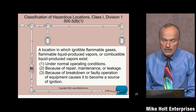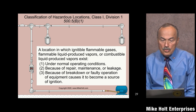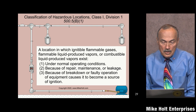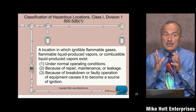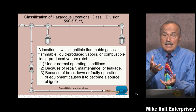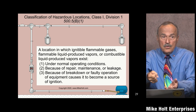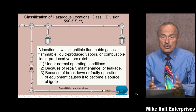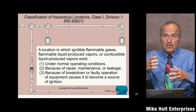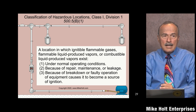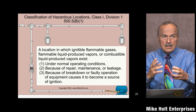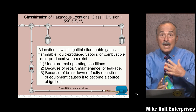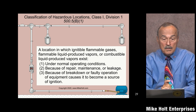Class 1 Division 1 is a location where ignitable flammable gases, liquid-produced vapors, or combustible liquids exist under normal operating conditions, or because of repair, maintenance, leakage, or equipment fault. For example, a gasoline dispenser — fuel is right there normally. Or maybe you're transporting propane tanks and something could fall and get damaged. Process engineers determine the classification, not the electrician.